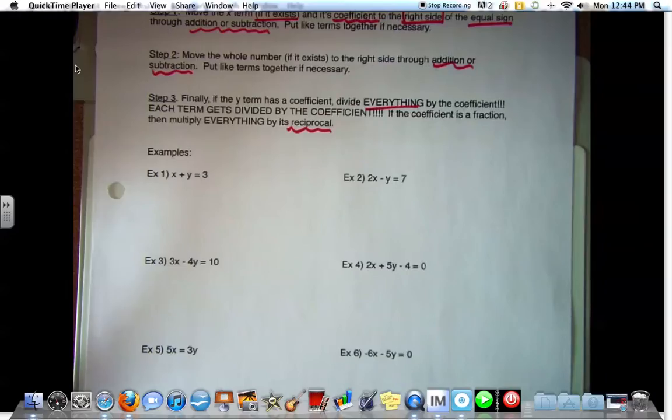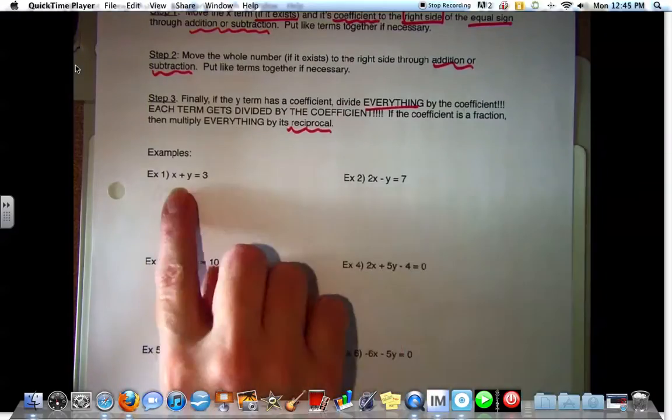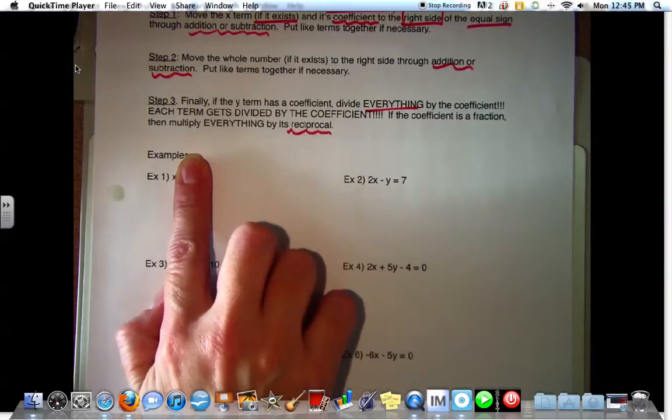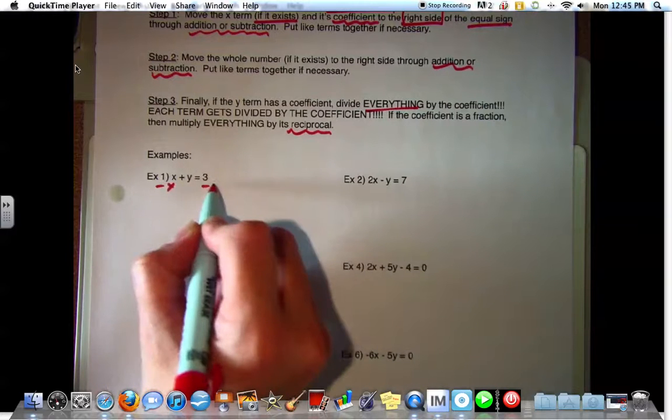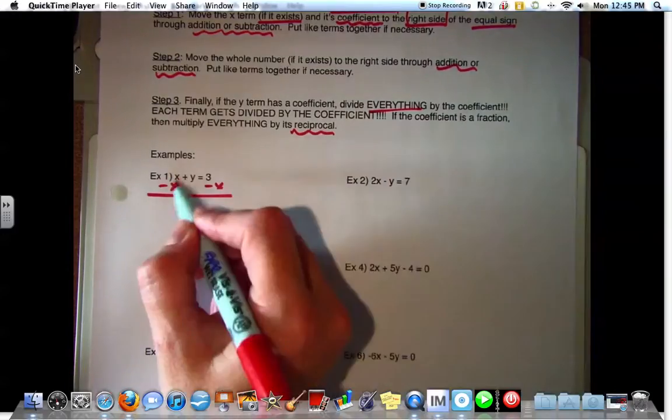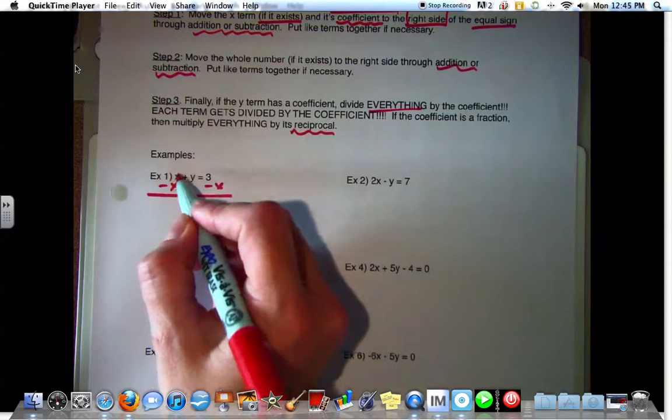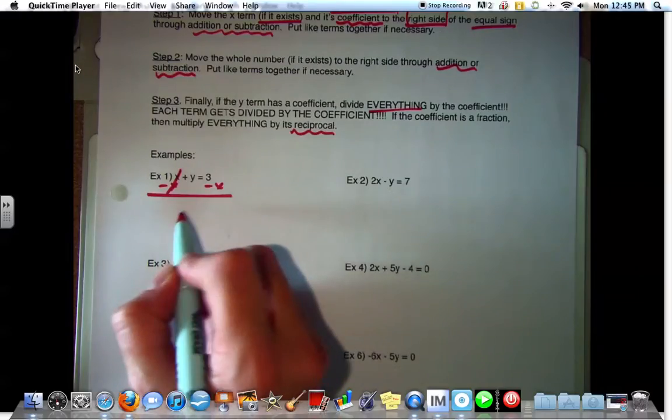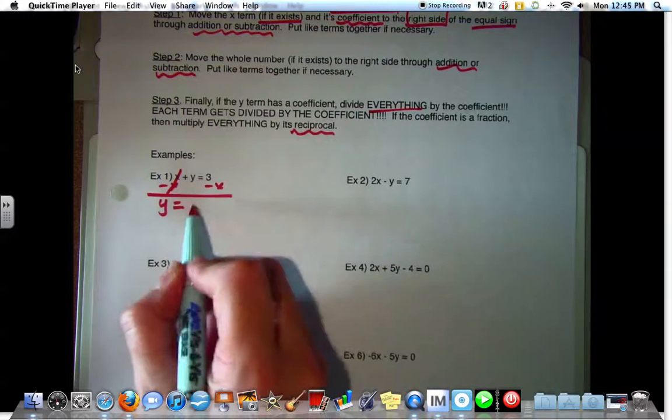All right, so we have example one. X plus Y equals three. What do we need to have stay on the left-hand side? The Y. So what do we need to move to the right side? The X. Okay, so we have X plus Y equals three. So taking a look at the X, is it positive or negative? Positive. So to move the X, we have to subtract. So we're going to subtract X from both sides.